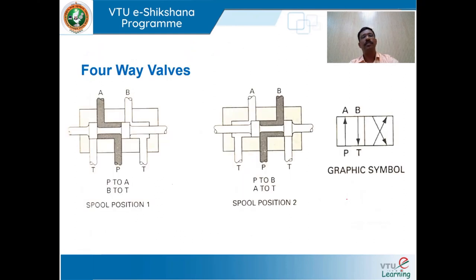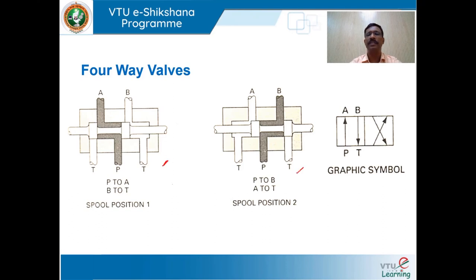We shall move on to four-way valves. Here, there are two switching positions, each denoted by a square — so two adjacent squares represent two switching positions.